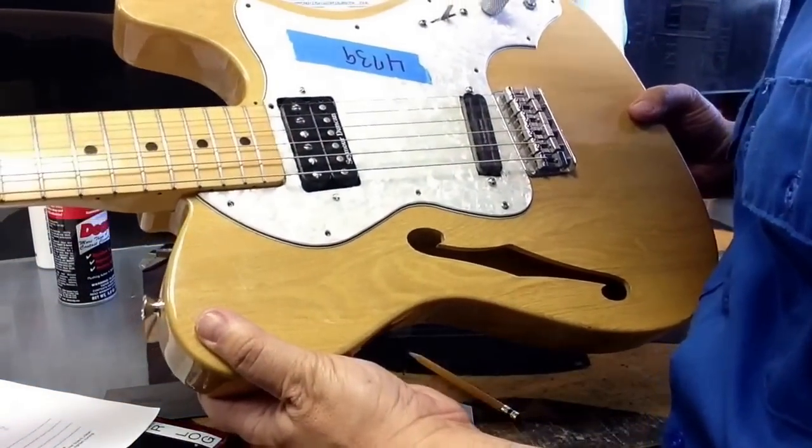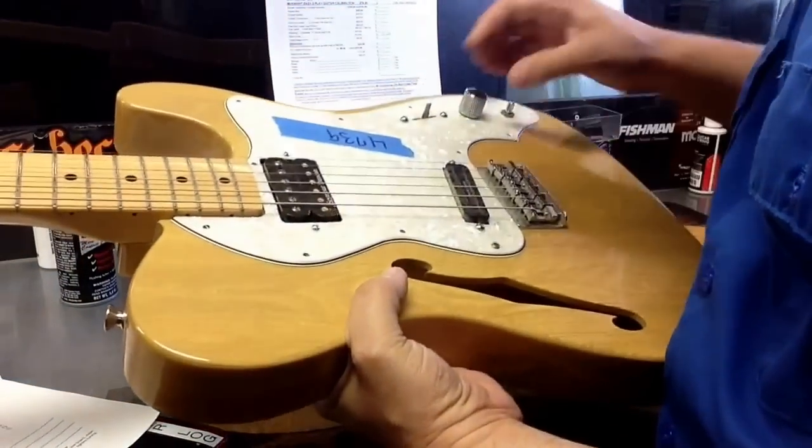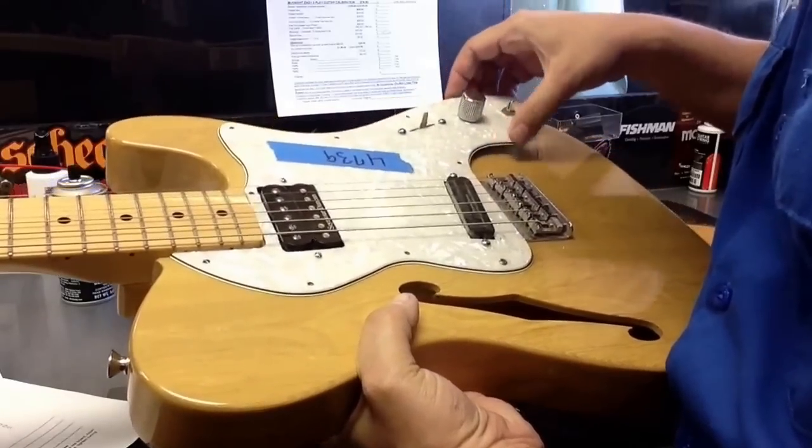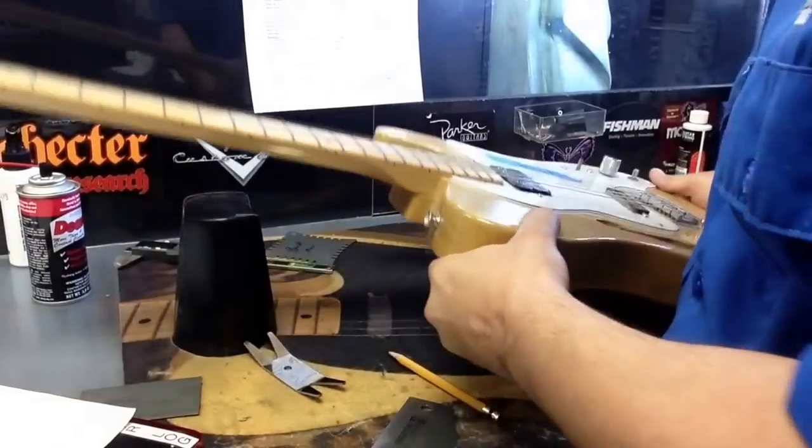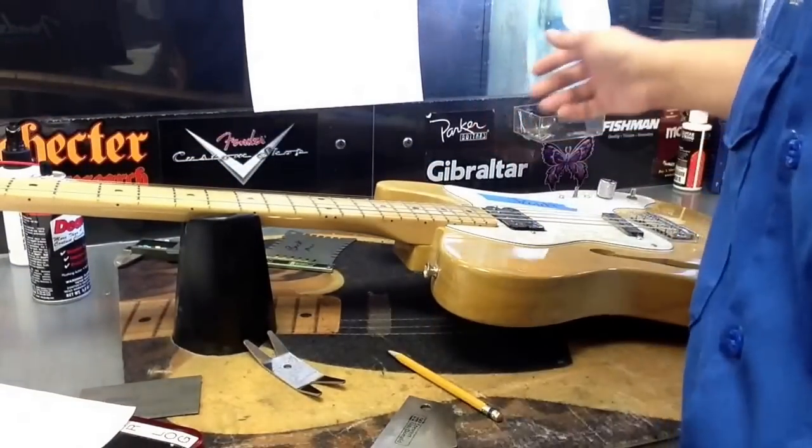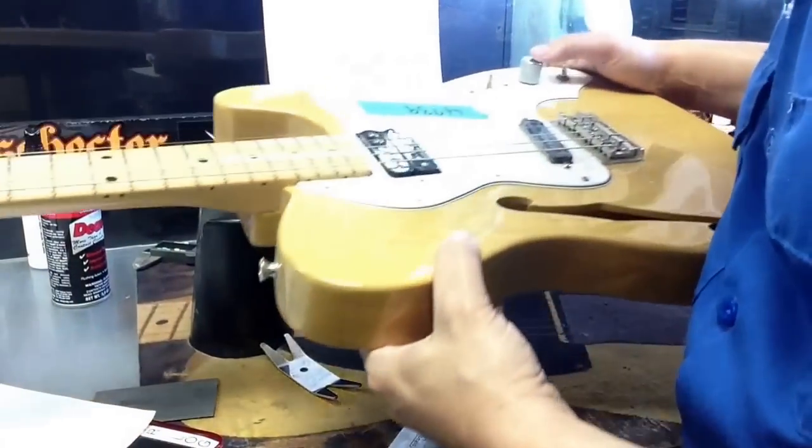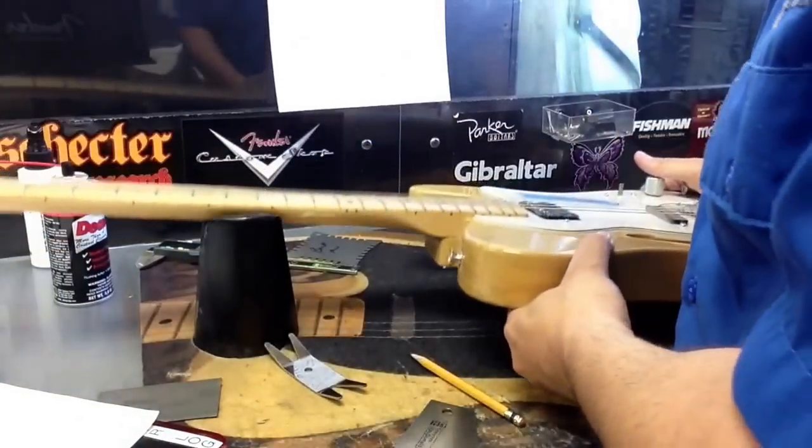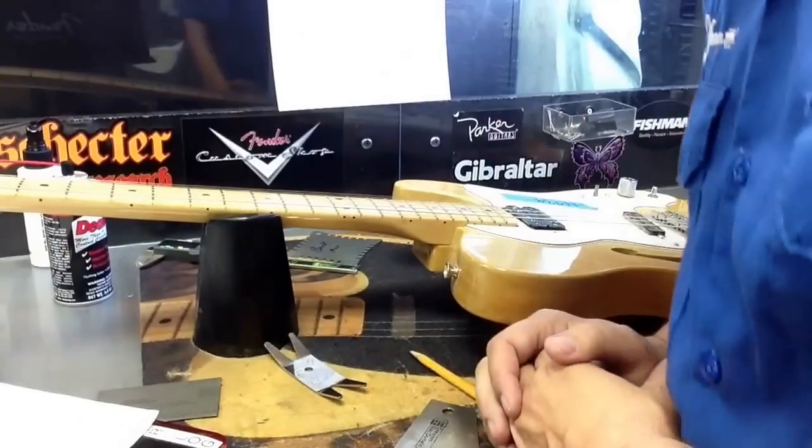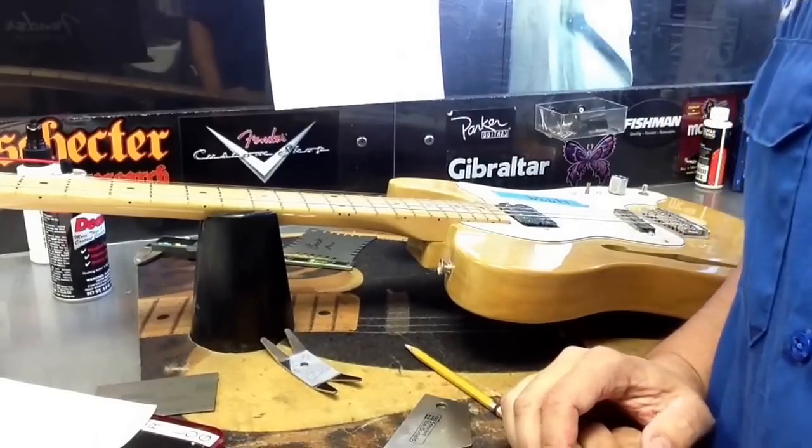In this particular guitar, the customer is missing some screws. When the guitar comes in, anything that the guitar is missing like a switch tip or a knob, we ask the customer at that time if they want us to correct that. If they say yes, we do it. If they say no, we don't. Normally we would do it unless they say no.